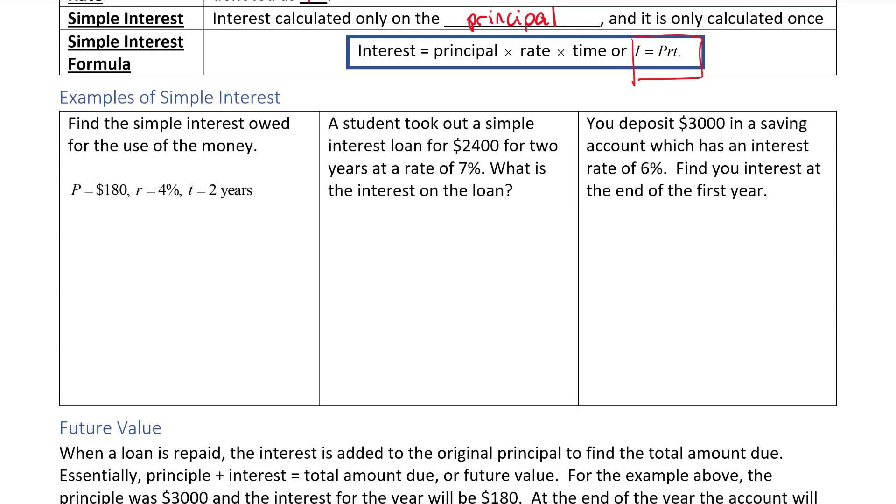For our first example it says find the simple interest owed for the use of this money. So P is $180, R is 4%, we're going to change 4% into a decimal 0.04, and T time is always in years so T is just equal to 2.